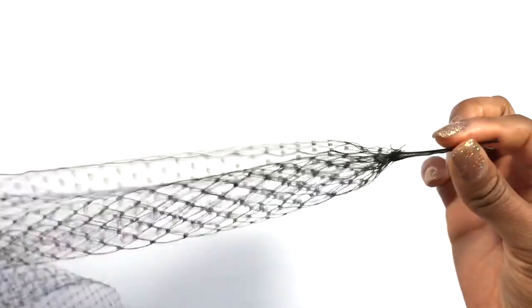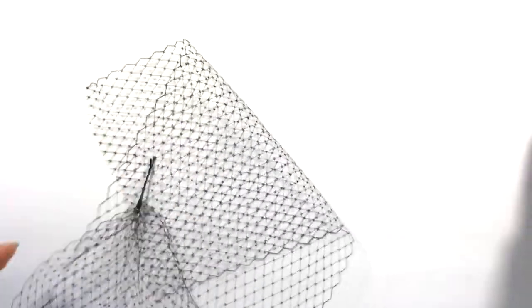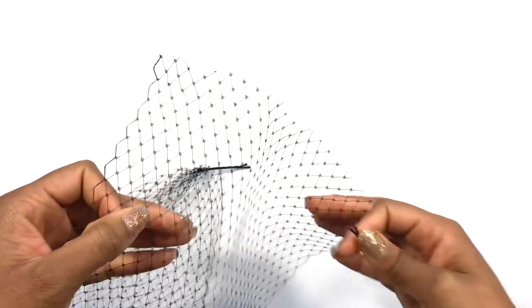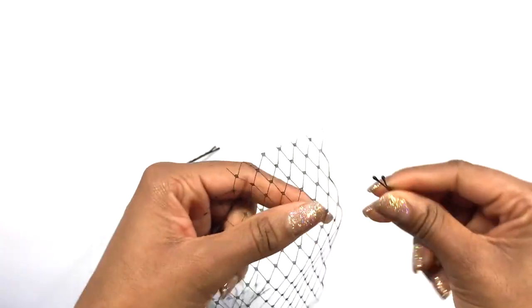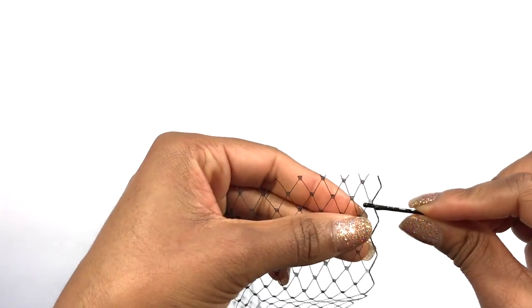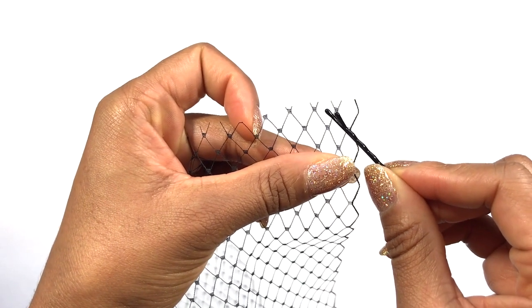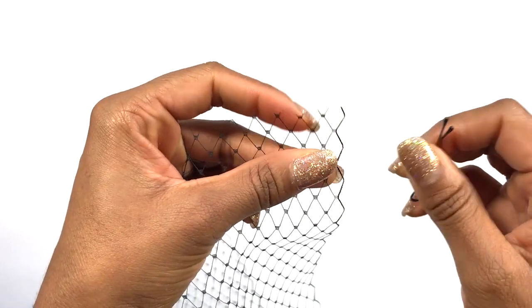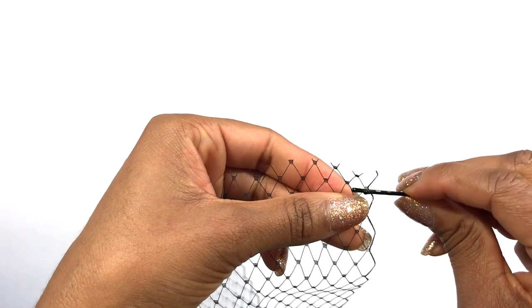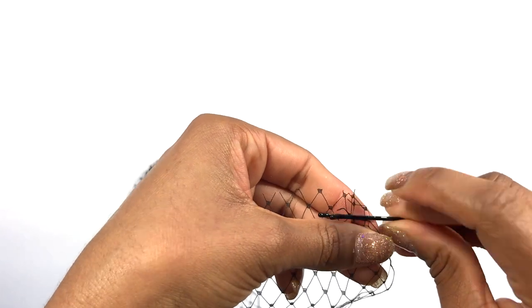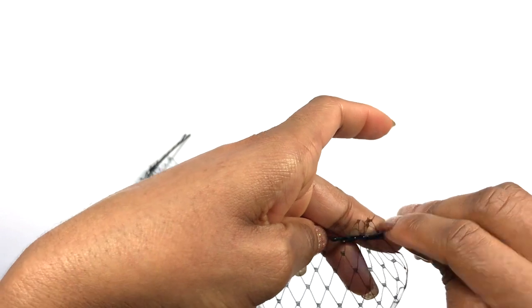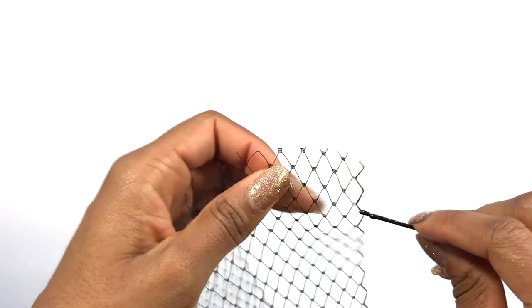Once you get down to the end, it's going to look like that. Then you're going to do the same thing for the other side. Take it again, start weaving it through. Now you want to make sure that you're weaving it through a full diamond, because if you do it up here the pin is just going to fall off. So you have to do it on this full row, in and out of each diamond.